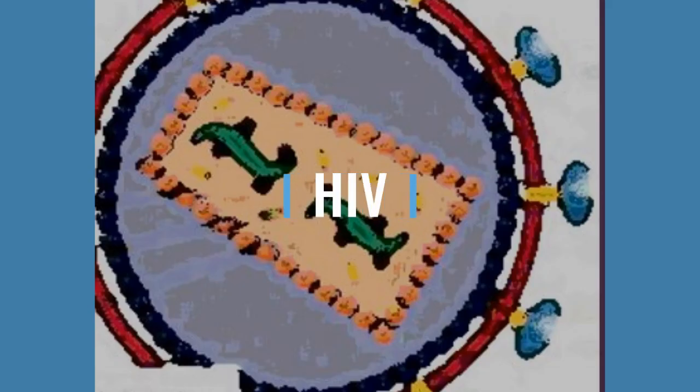Although AIDS was first labelled in 1981, the actual causative organism — the virus that can lead to AIDS-defining illnesses — wasn't identified until 1983 and 1984, and was then actually called HIV, the Human Immune Deficiency Virus, in 1985.